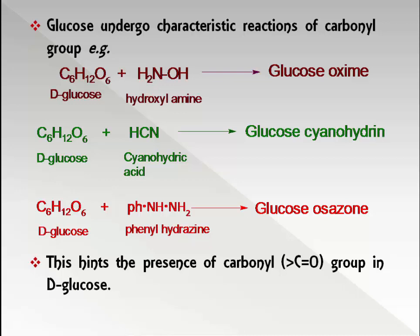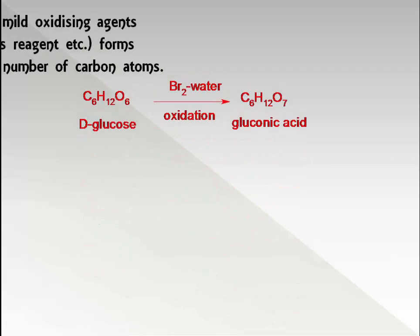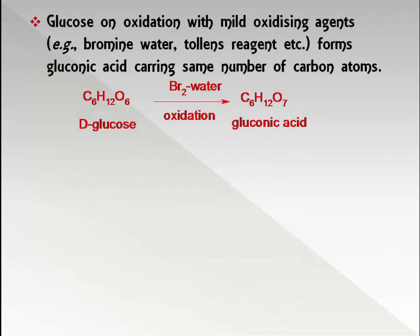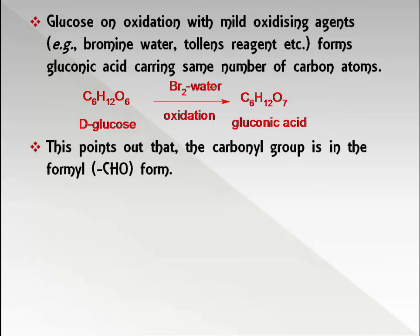Glucose on oxidation with mild oxidizing agents like bromine water or Tollens' reagent forms gluconic acid, carrying the same number of carbon atoms. These points indicate that the carbonyl group is in the aldehyde form.